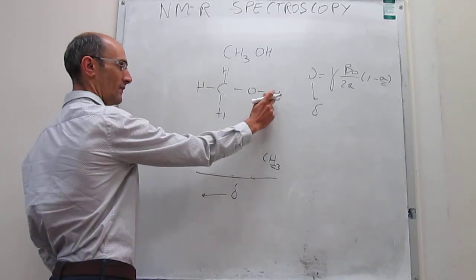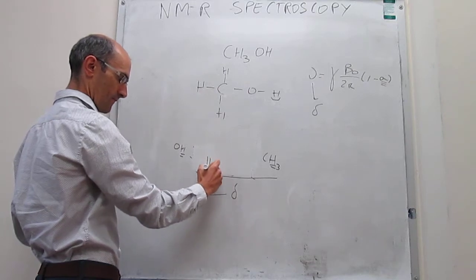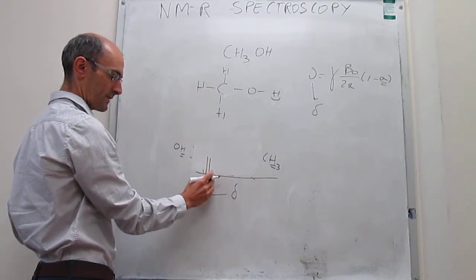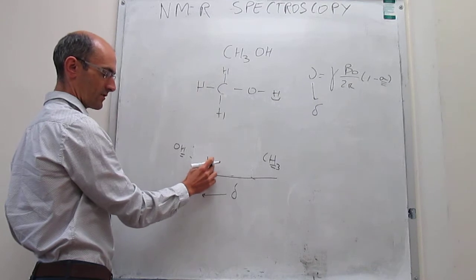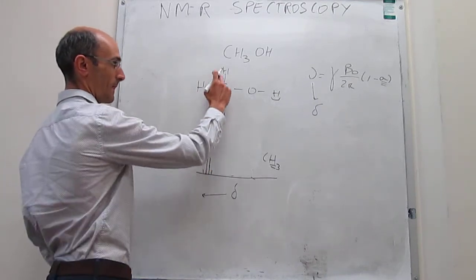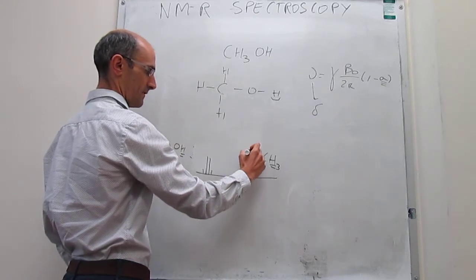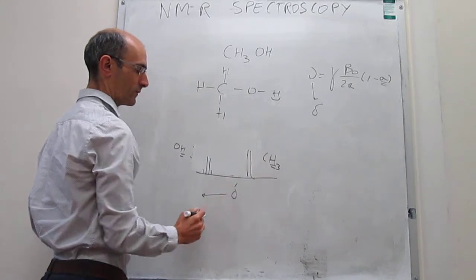Those signals tend to be split into patterns that we have to explain. So the signal due to this proton actually looks like this. It's four peaks, and the two in the middle actually have higher intensity than the ones at the edge. And the signal for those CH3s looks like this, it's two signals of equal intensity.